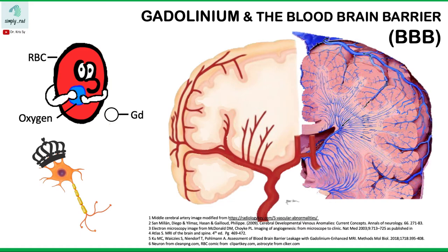Today we're going to talk about gadolinium and the blood-brain barrier. How does gadolinium produce enhancement on MRI? To answer this, let's first follow the story of the red blood cell and the neuron.